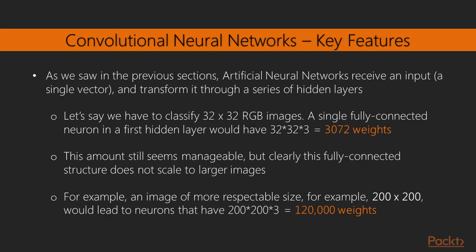So as we have seen in the previous sections, artificial neural networks receive an input, a single vector, and transform it through a series of hidden layers. Let's say we have to classify 32 by 32 RGB images. A single fully connected neuron in the first hidden layer would have 32 times 32 times 3, that is 3072 weights.